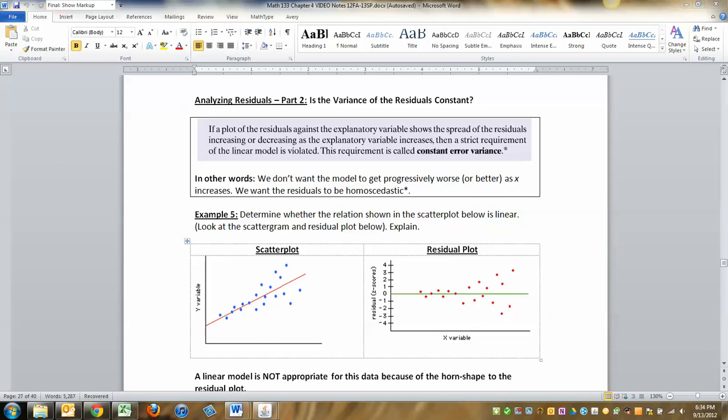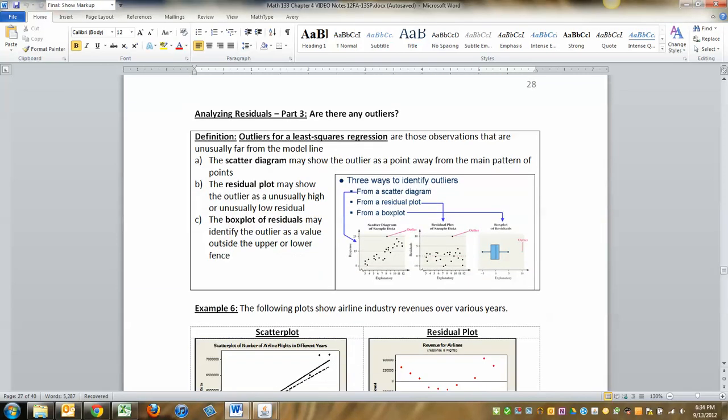All right, now we're going to move on to analyzing the residuals just a little bit more. We've already done this part, and we're going to be looking at outliers. So outliers, remember, are data points that lie far away from the rest of the group. Now, in bivariate data, data with two variables, there's a couple ways you can spot them.